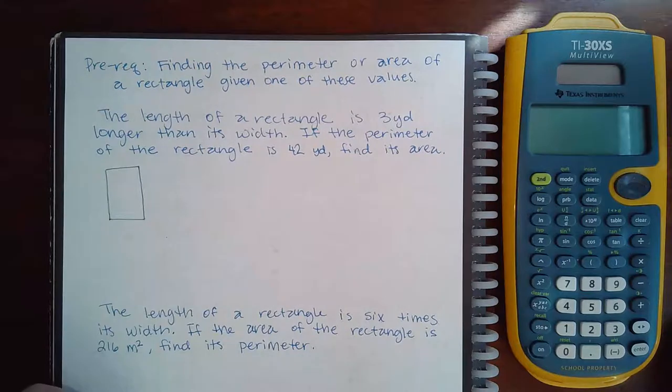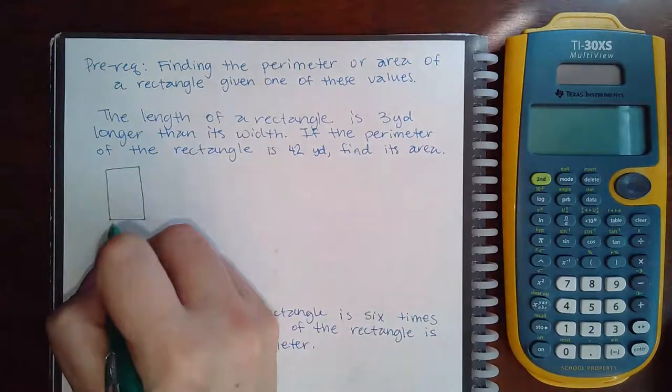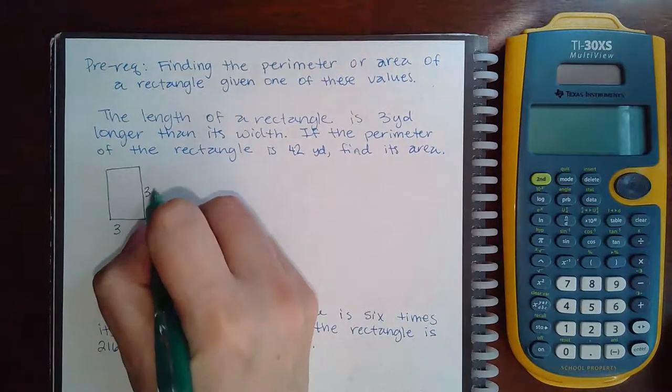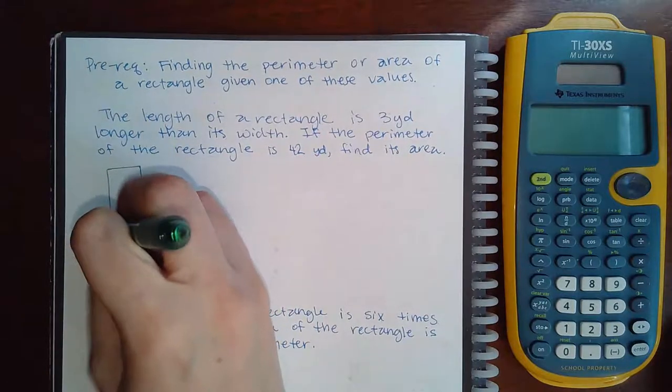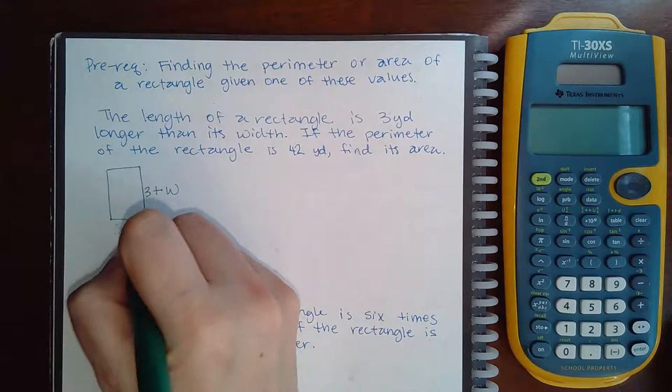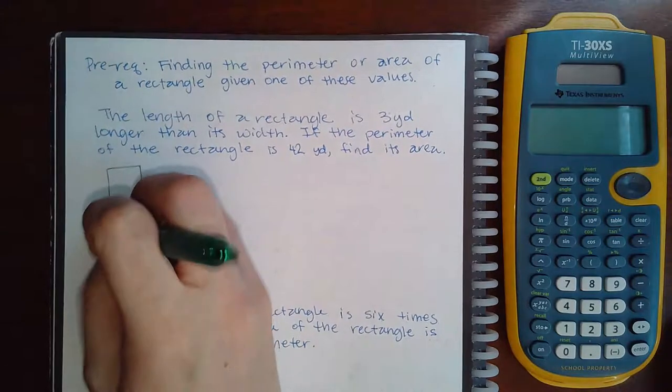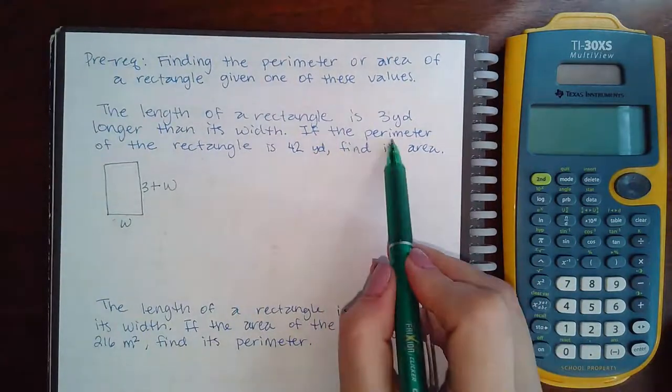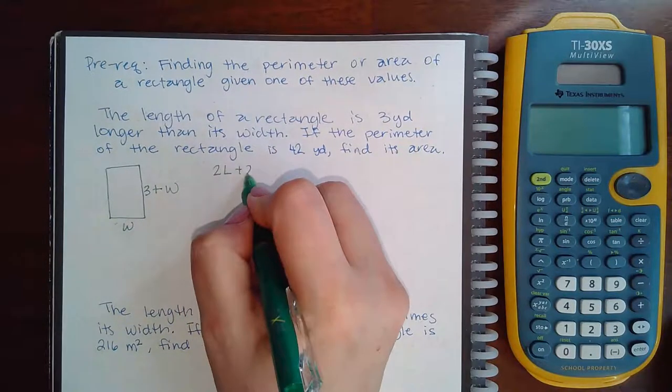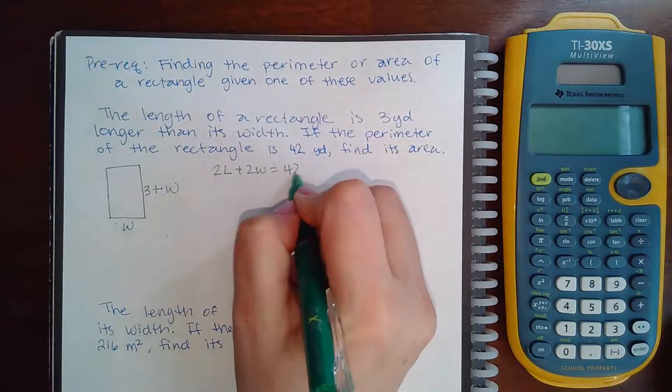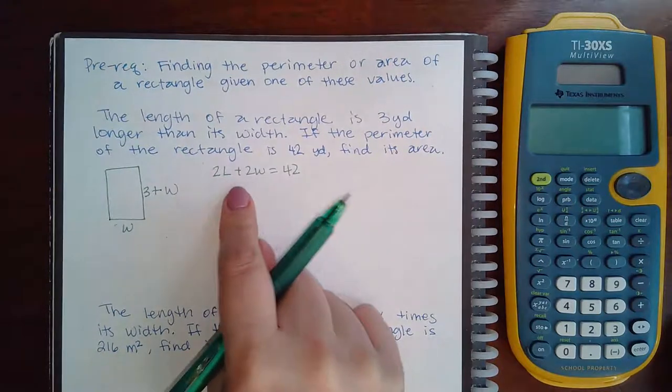So the length of the rectangle is 3 yards longer than the width, so that means 3 plus W, which also means that the width is W. I'm telling you that the perimeter of a rectangle is 42 yards, so that means 2L plus 2W equals 42. That's the formula for the perimeter of a rectangle.